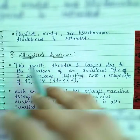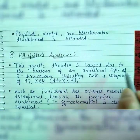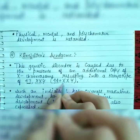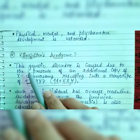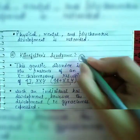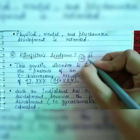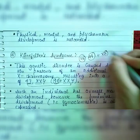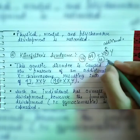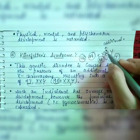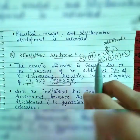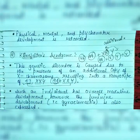The second chromosomal disorder is Klinefelter's Syndrome. This genetic disorder is caused due to the presence of an additional copy of X chromosome, resulting in a karyotype of 47, XXY (44 + XXY). Normally there are 44 autosomes plus XY in a male, but in Klinefelter's Syndrome an additional X chromosome is present, making the total 47 chromosomes.